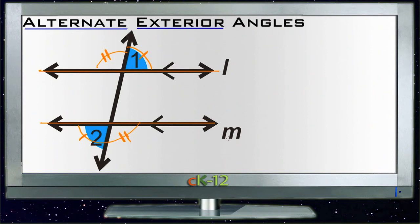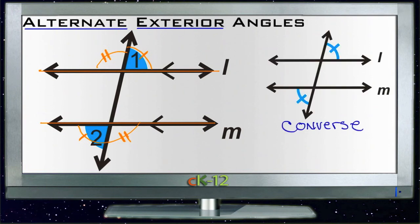Now, similar to the alternate interior angles, you can also use the postulate backwards—the converse. The postulate says that if we don't know for certain that two lines such as L and M are parallel, if we can show that the alternate exterior angles are equal, then we know that the lines are parallel.